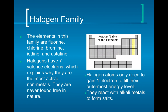The halogens have seven valence electrons, so they're looking to gain one more electron to have a full shell. That's why halogens want to bond with alkali metals — chlorine is a halogen and sodium is an alkali metal, so they form NaCl (sodium chloride) very easily. That's why they bond so readily and well.